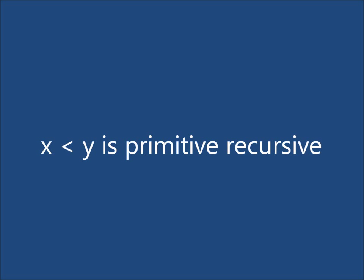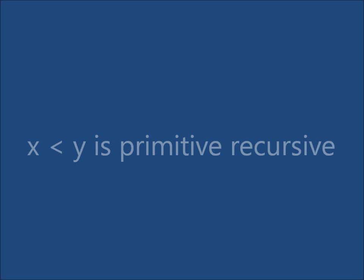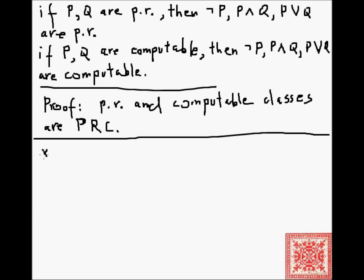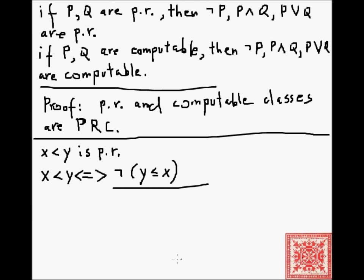Let's use this fact to show that x less than y is primitive recursive. x < y is primitive recursive because it can be obtained from primitive recursive predicates. By the first corollary, it is primitive recursive: x < y is defined as not(y ≤ x). Since y ≤ x is primitive recursive, by the corollary the compound predicate not(y ≤ x) is also primitive recursive.